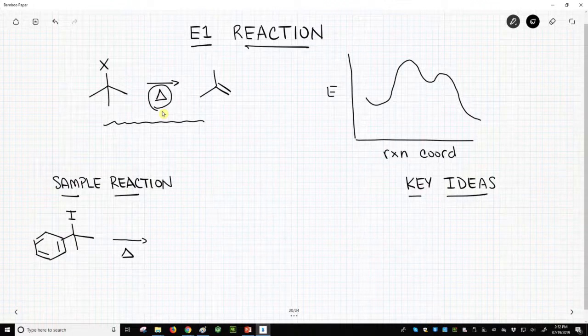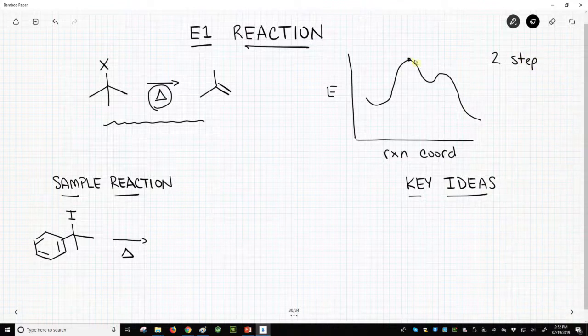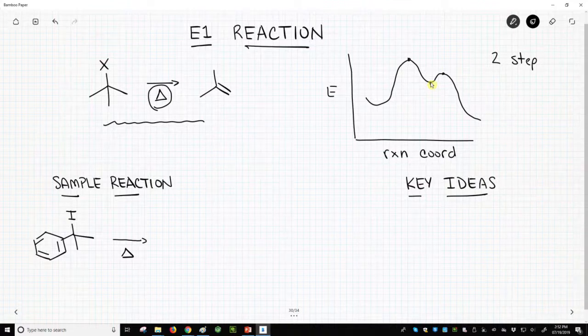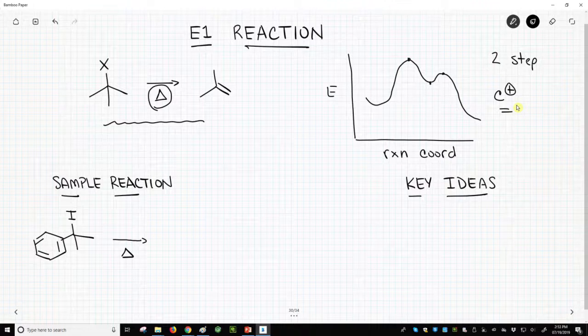From an energy coordinate standpoint, we can see on the right this is a two-step process. We have two transition states and therefore in between we're going to have an intermediate. Much like the SN1, we're going to have a carbocation intermediate. These are two features that stand out when you look at the reaction coordinate diagram.